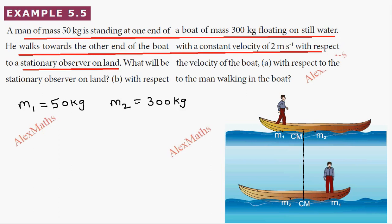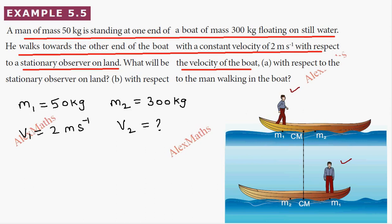So we have to take a diagram. The man is walking with a constant velocity of 2 meters per second with respect to the stationary observer on the land. This is the man-boat system.